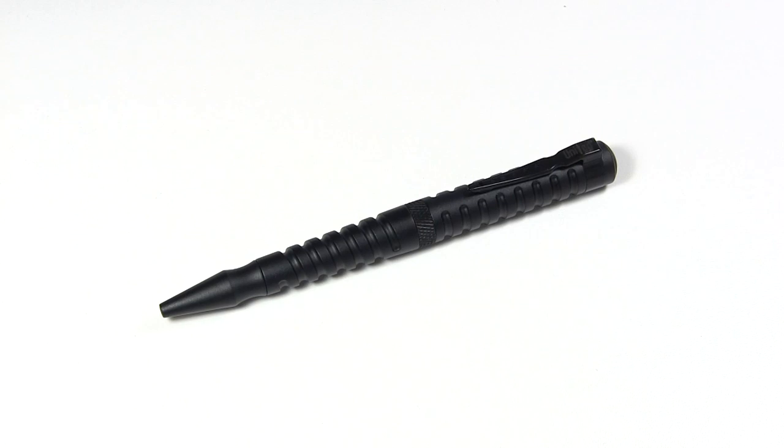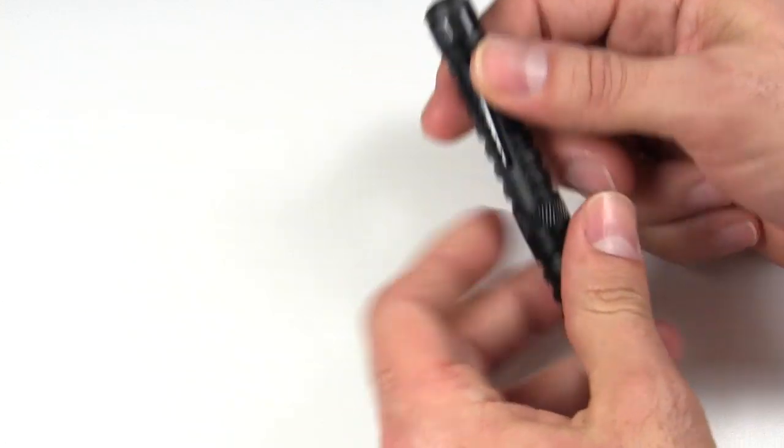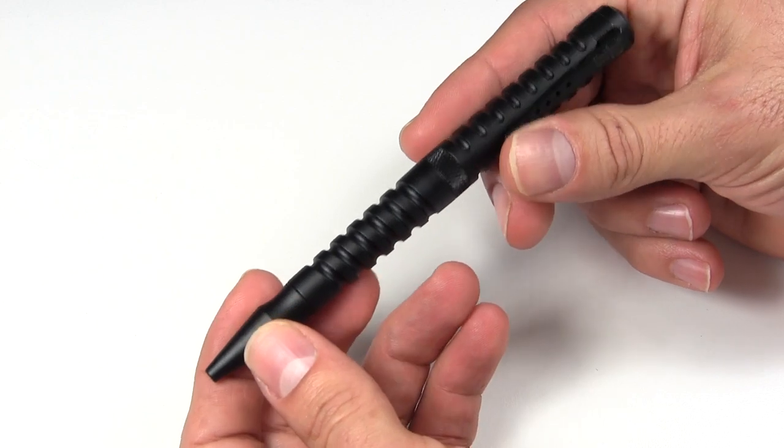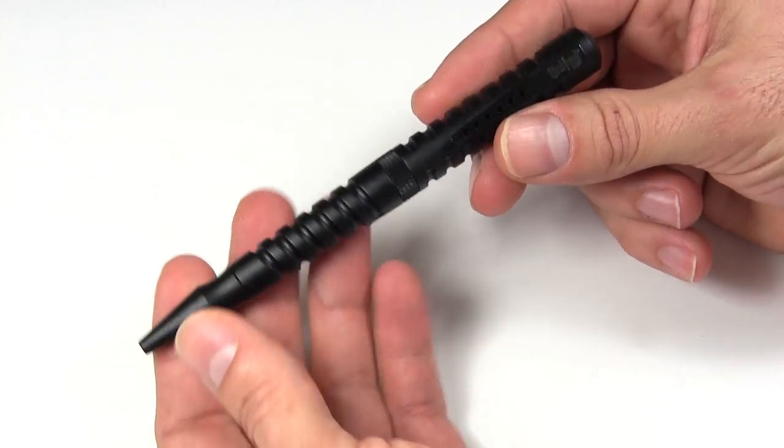If it says Uzi on it or Smith & Wesson or Takedown or even Surefire, if they know what they're looking at you might be a little bit more likely to get hassled if they decide to pull your bag out and search it. They've got this pen with this big crenellated tip on it and they're gonna say what's this? So that's just a pen. Oh, why does it say Uzi on it?